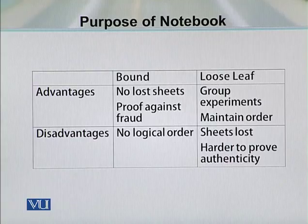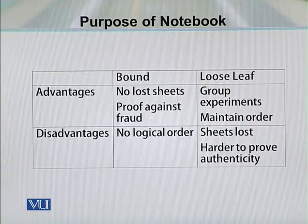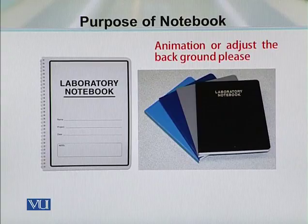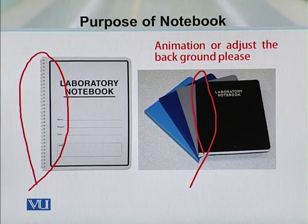With a loose sheet notebook, there is always a chance to lose the sheets and lose your key results. The advantage is that you can group different types of experiments and group the results. But because of the fear of losing results, this kind of notebook is not normally preferred in industrial or research facilities. Looking at these examples, this is a ring binding, and this one is a permanent bound form of the notebook that needs to be preferred in the laboratory.